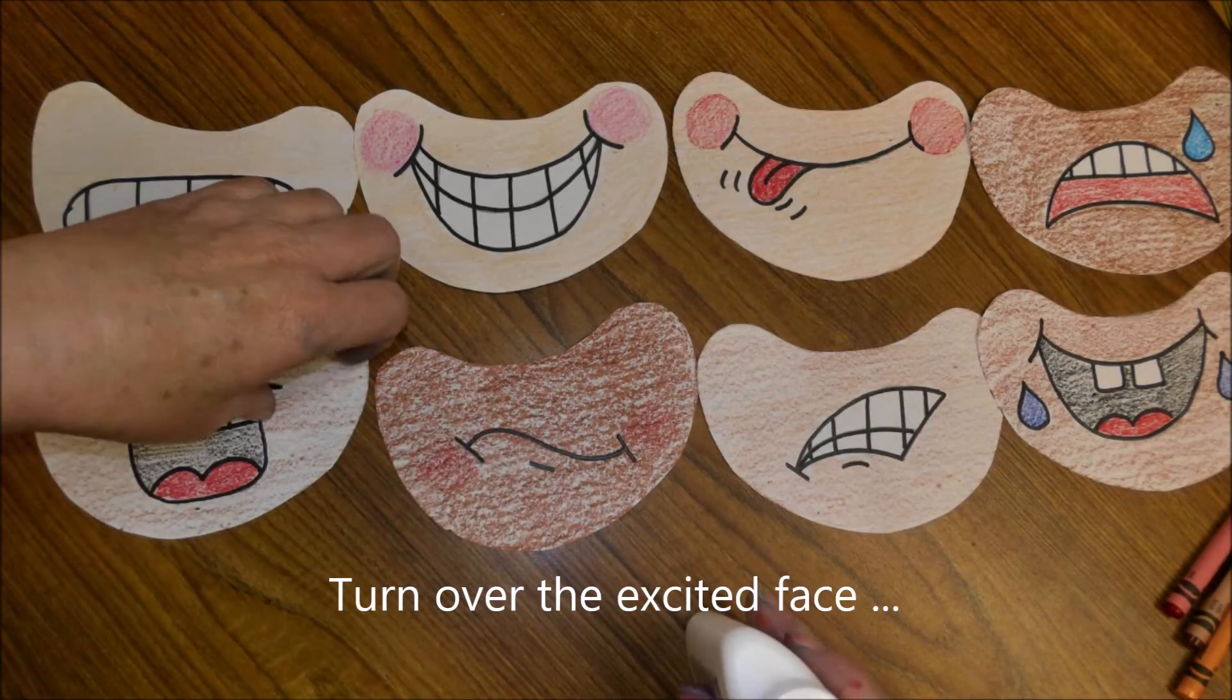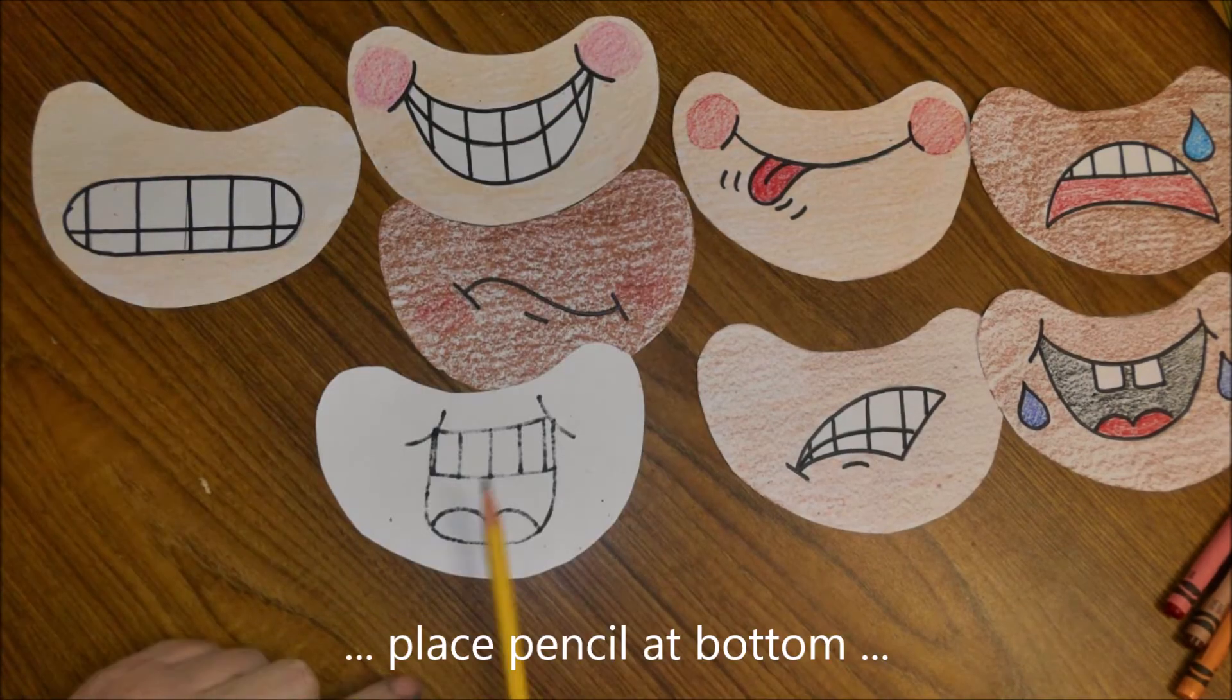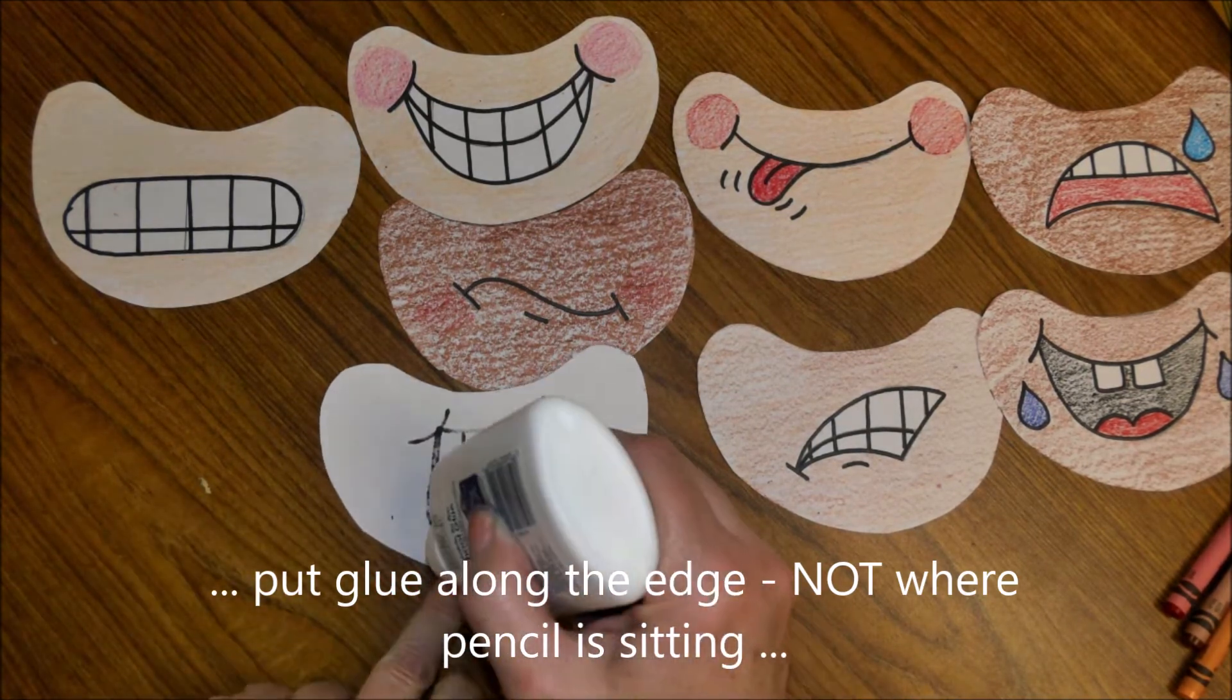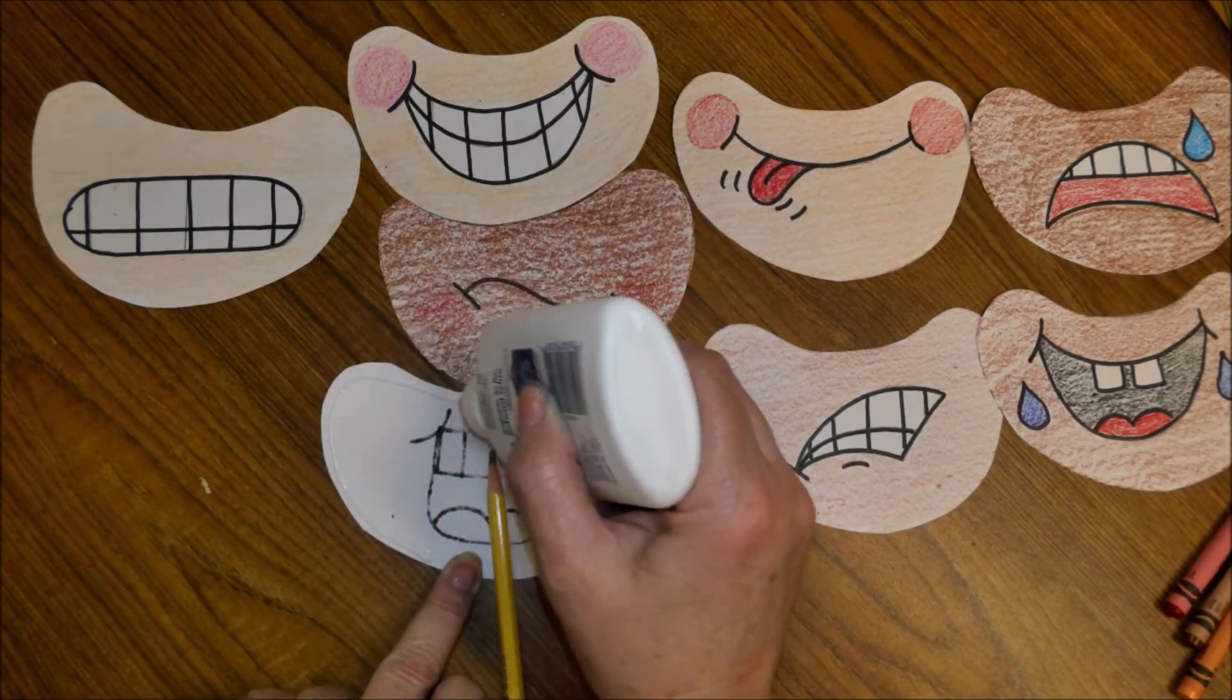Next we're going to be gluing. Watch carefully because we're going to want to be able to slip this on the end of our pencil afterwards for holding in front of our face. Turn over the excited face, place your pencil at the bottom like this. We're going to put glue all the way around, but not where the pencil is because we want to leave a little hole for the pocket so it'll slide on our pencil later.